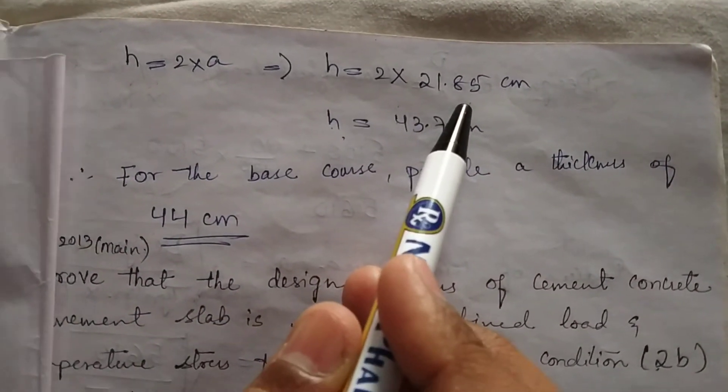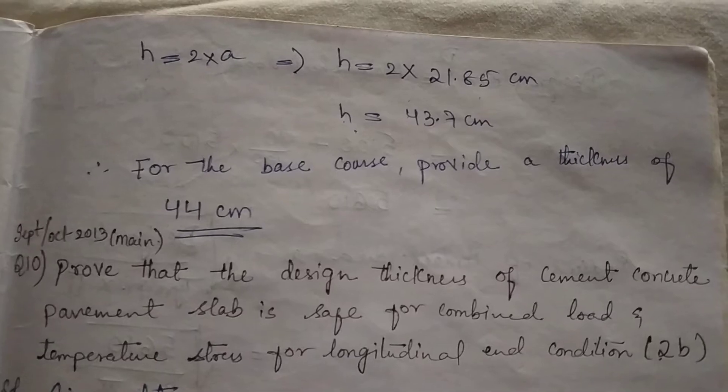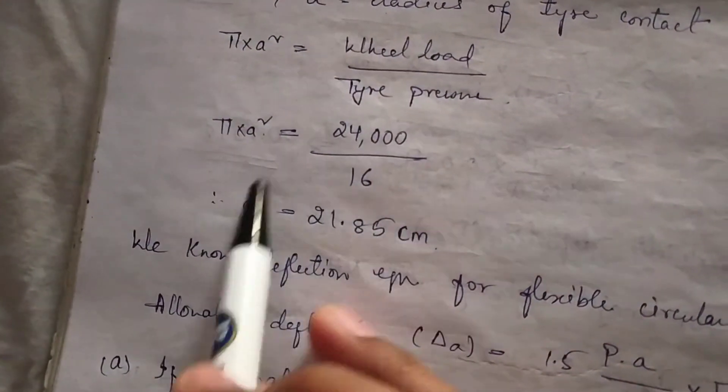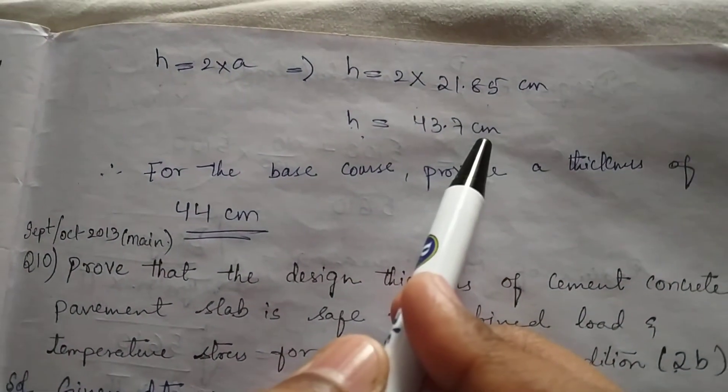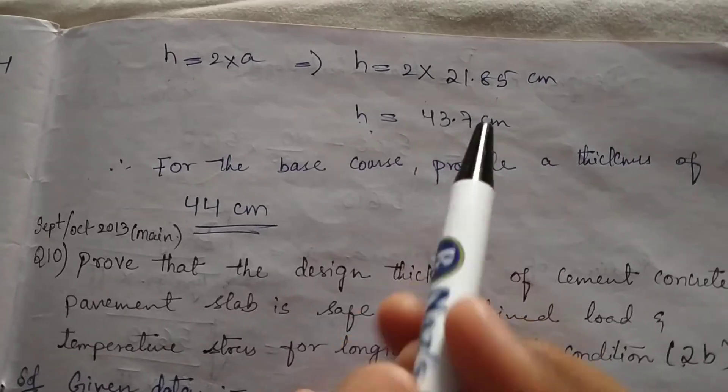We have the value of a as we have calculated here. I have calculated the value of a, just substitute in h equal to 2 into a. We will get the final thickness of flexible pavement.